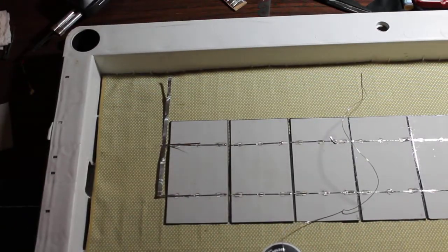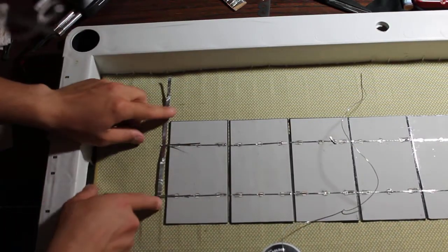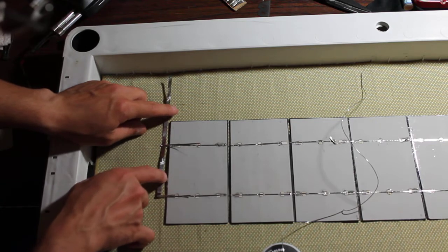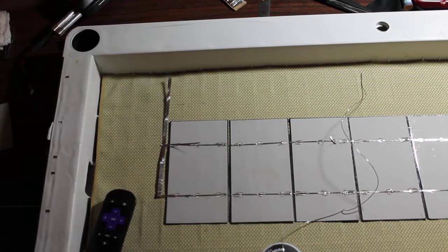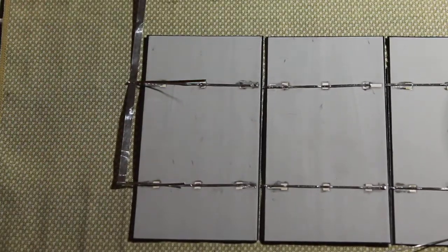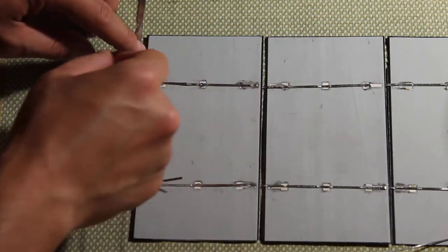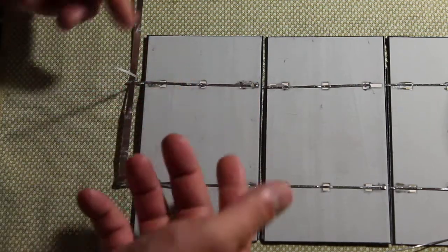Now I figured I'd try to do the bus wire. Let's see if you can see well in the camera, zoom it on. So I took the tabbing wire, this is the ground, this is going to be the negative side.